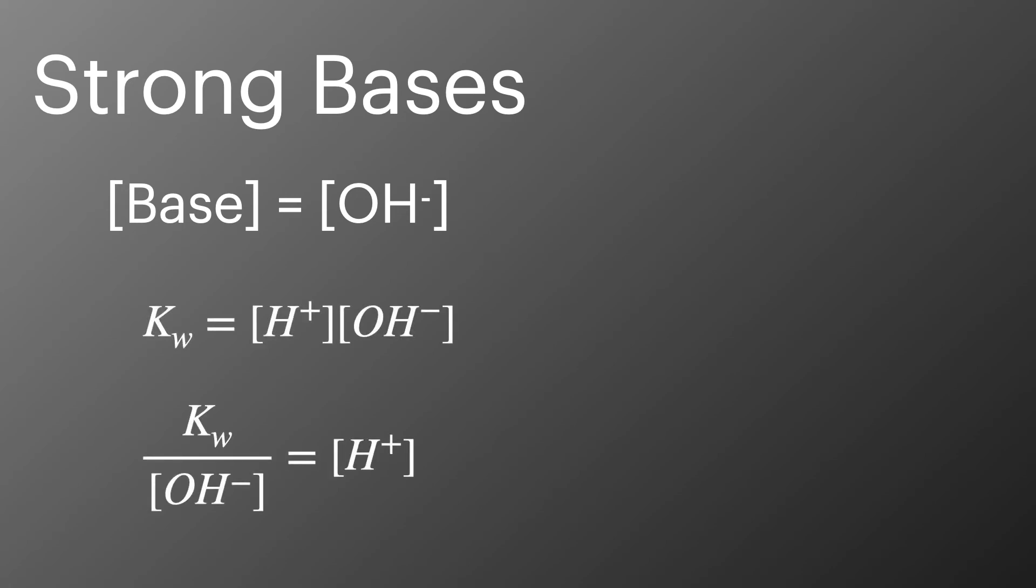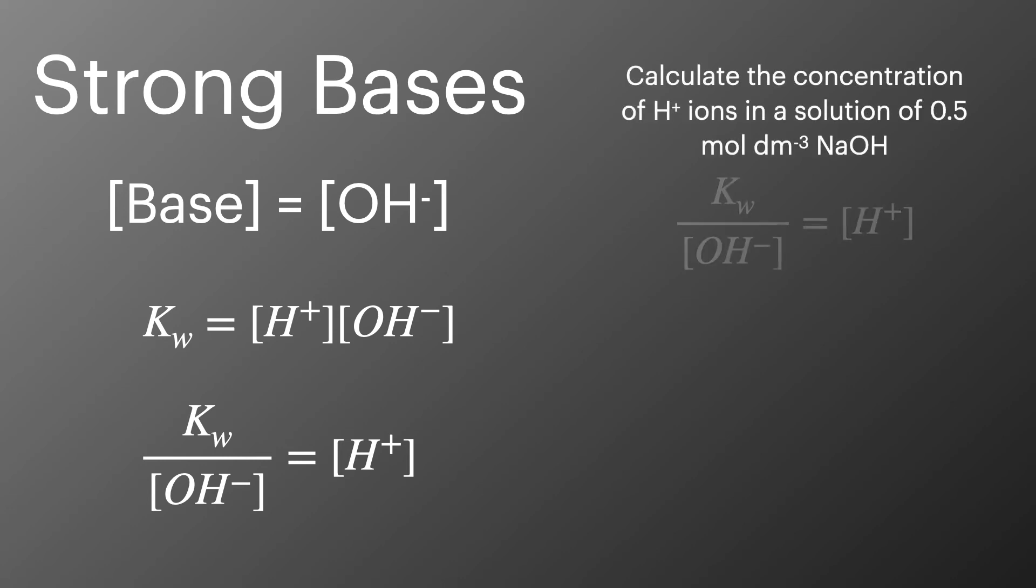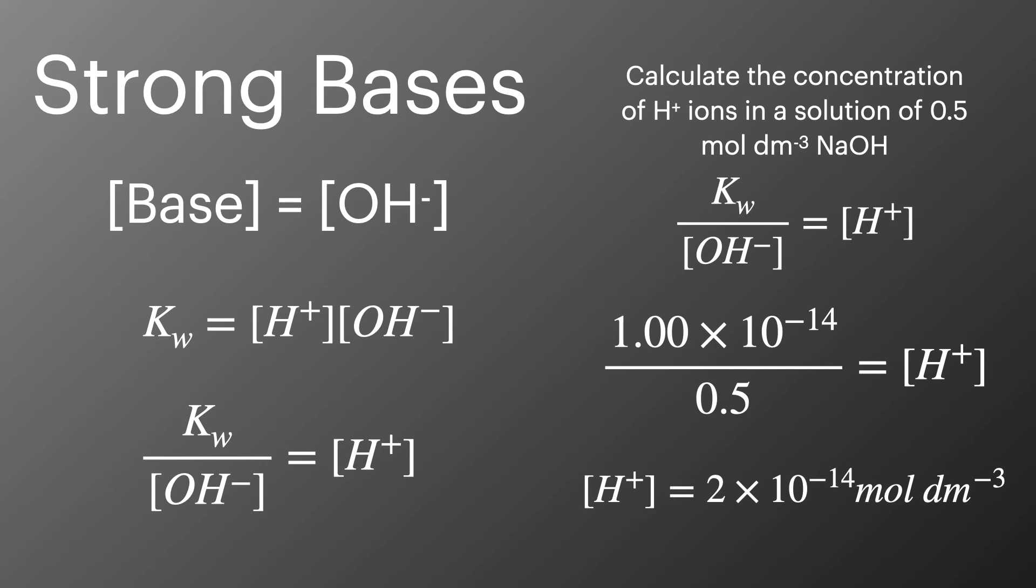Strong bases present a slightly different scenario, which are in some ways simpler than the weak acid example we just looked at. We can assume that the concentration of base is equal to the concentration of hydroxide ions in solution, and then using the Kw expression we can calculate the concentration of H+. In this example where we have a 0.5 mol per decimetre cubed solution of sodium hydroxide, we can use the rearranged equation for Kw, substituting the numbers, and calculate that there's a hydrogen ion concentration of 2 times 10 to the minus 14 mols per decimetre cubed.